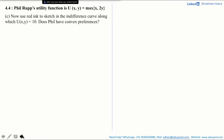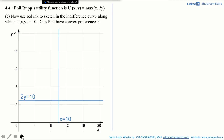In this video we will be solving part c of question number 4.4. The question says: use red ink to sketch an indifference curve along which u(x, y) is equal to 10, and then determine whether Phil has convex preferences. We have drawn a graph where on the x-axis you have good x and on the y-axis you have good y. This vertical line represents the equation x = 10.